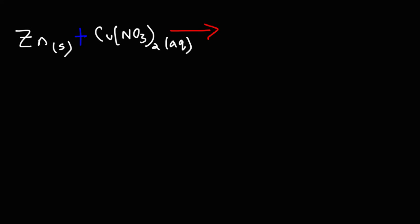In this video, we're going to talk about how to predict the products of a single replacement reaction. One of the first things you need to do is determine if the reaction will proceed, and you can do so using the activity series of metals.